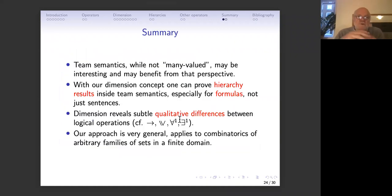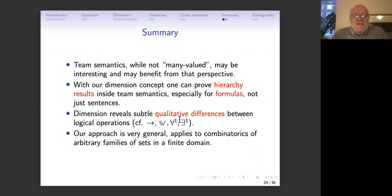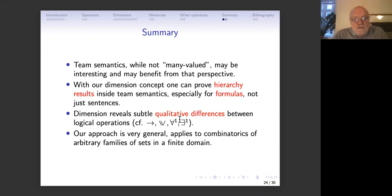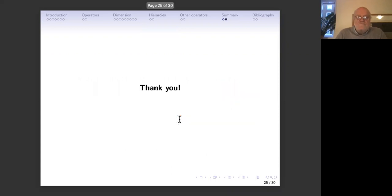In summary: team semantics, while perhaps not many-valued in the traditional sense, may be interesting from the many-valued perspective. With the dimension concept introduced here, one can prove hierarchy results inside team semantics for formulas, and reveal subtle qualitative differences between logical operations. Finally, our approach is very general and abstract — basically it has nothing to do with logic; it's just combinatorics of finite sets, so it might have interest in pure finite combinatorics. Thank you.